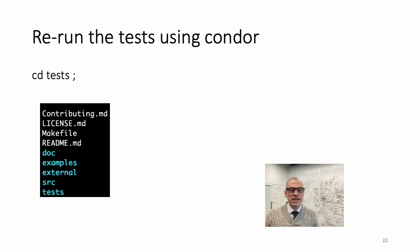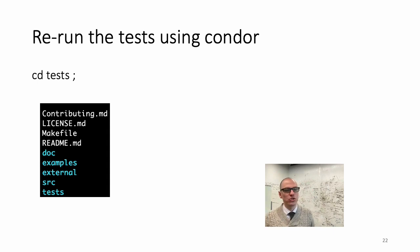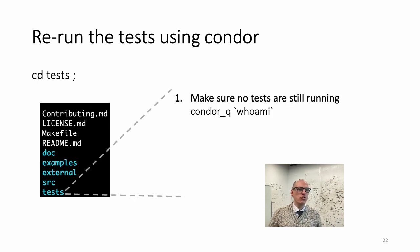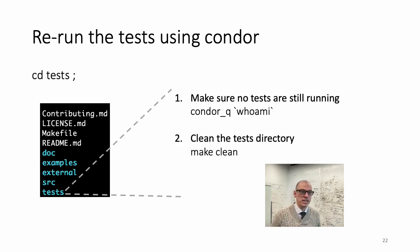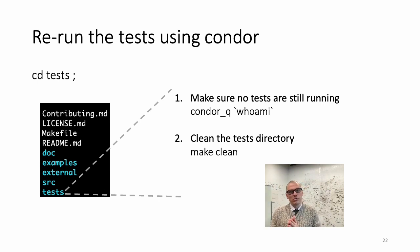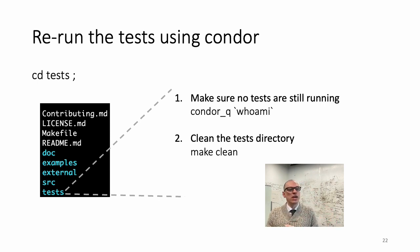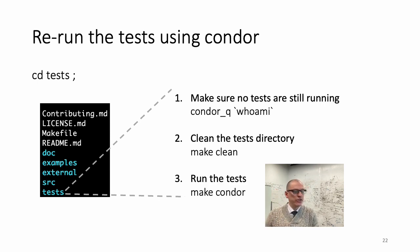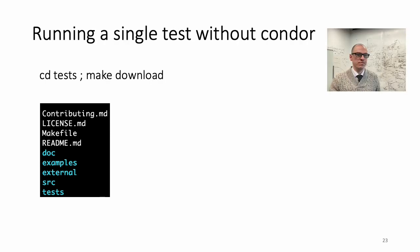If you fix the bug and want to retest everything to make sure it's in good state, go to tests and make sure there are no tests still running under your name for this specific NOEL installation. Only when you see no jobs running under your name, go under tests, run make clean to delete everything that was automatically generated, and then rerun using make condor.